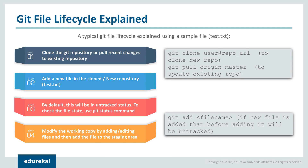In step 0, we clone the git repository or pull recent changes from the remote. The repository to clone can be local or remote. Cloning is generally a one-time operation — once a developer has a working copy, all version control operations are managed through their local repository. In the next step, we add files to the cloned or new repository — either new or modified files. In step 3, we check status using git status. In step 4, we modify files and add them to the staging area.